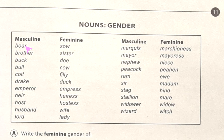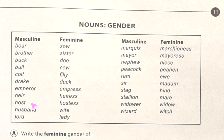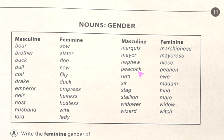Here it is written: masculine and feminine pairs — boar/sow, brother/sister, buck/doe, bull/cow, colt/filly, drake/duck, emperor/empress, host/hostess, husband/wife, lord/lady, marquis/marchioness, mayor/mayoress, nephew/niece, peacock/peahen, ram/ewe, sir/madam, stag/hind.